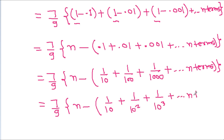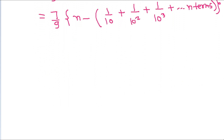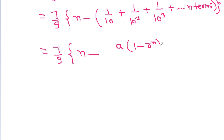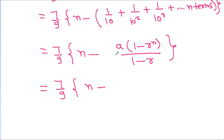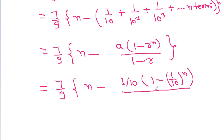And it is 7 by 9 times n minus, and the sum of a GP is a times (1 minus r to the power n) by (1 minus r). Here a is 1 by 10, and the common ratio r is 1 by 10, so 1 minus r is 1 minus 1 by 10, which equals 9 by 10. So it is 7 by 9 times (n minus (1 by 10) times (1 minus (1 by 10) to the power n) divided by (9 by 10)).